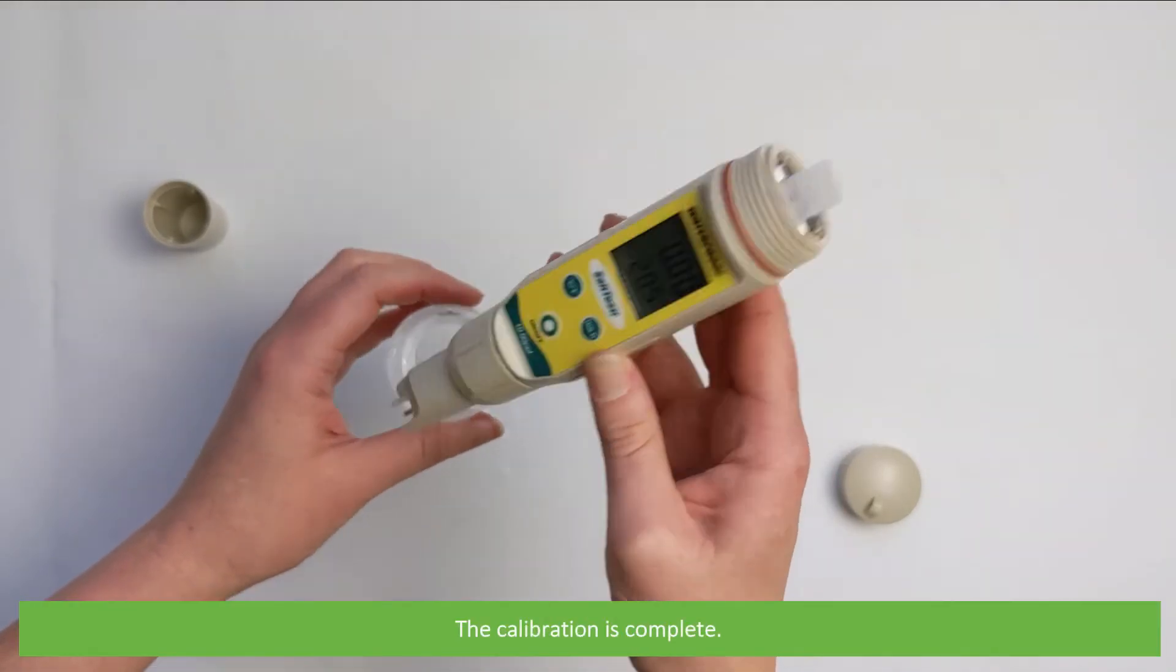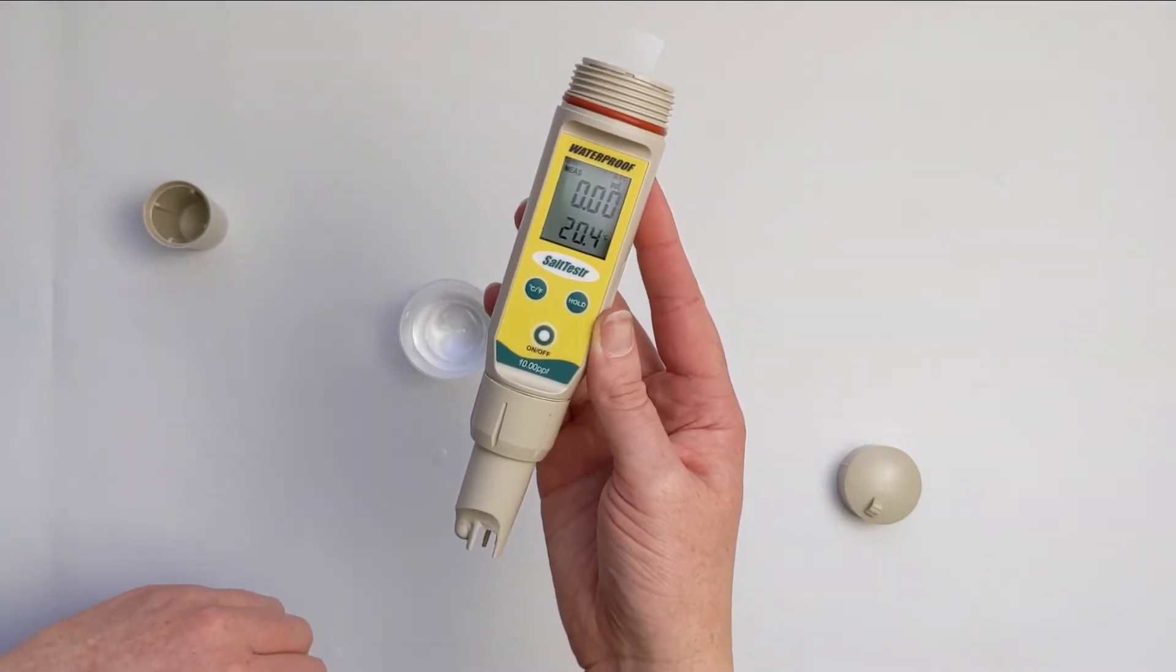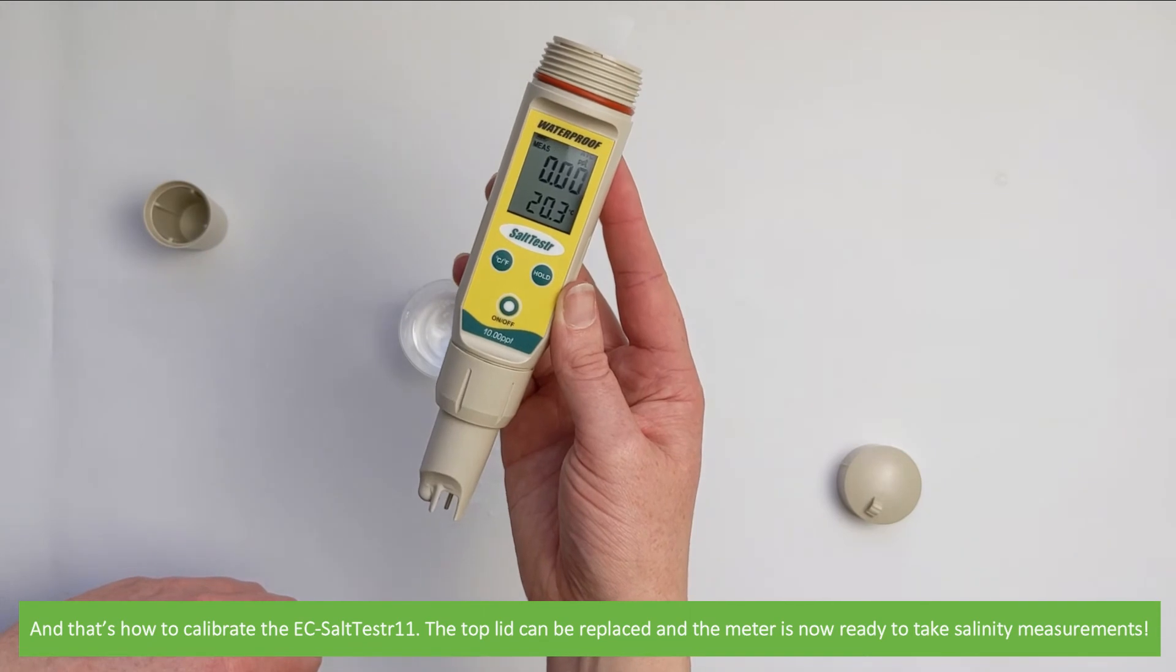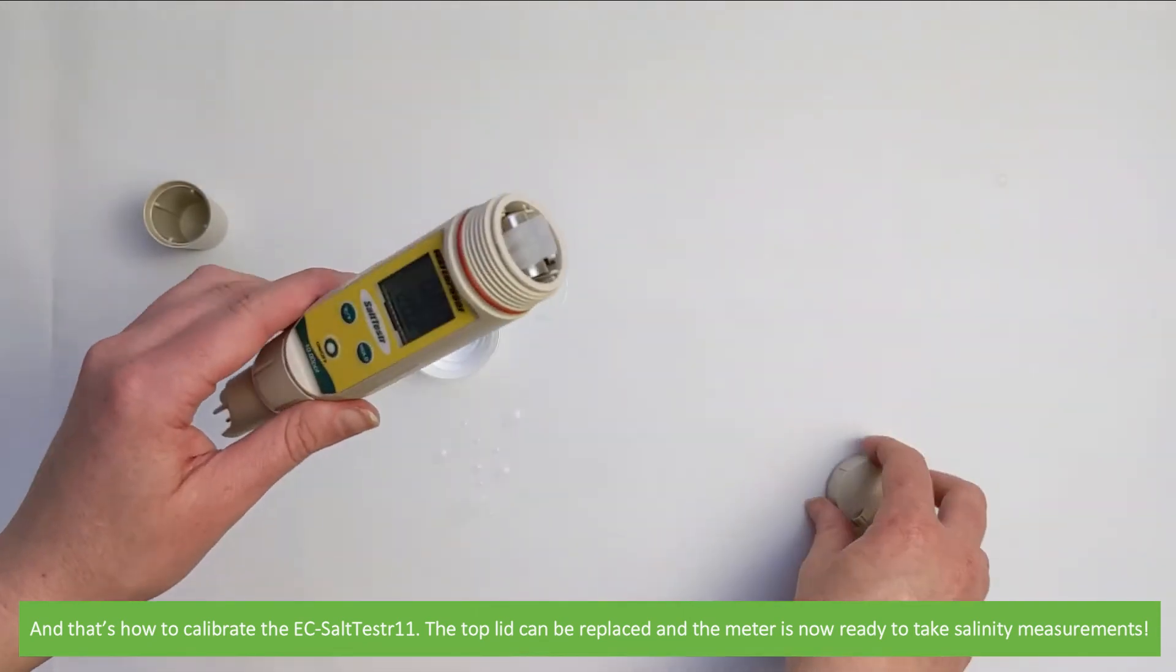The calibration is complete. And that's how to calibrate the EC Salt Tester 11. The top lid can now be replaced and the meter is ready to take salinity measurements.